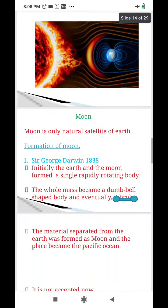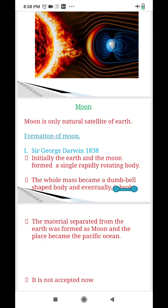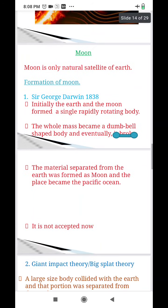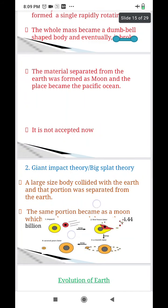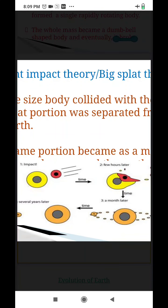But this theory is not accepted now. Present scientists have another explanation which is widely believed nowadays. This is giant impact or big splat theory. As per this theory, a large size body was passing by the earth and it collided with the earth and some portion from the earth got separated and ultimately this separated portion became the moon.